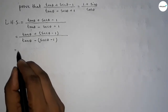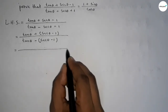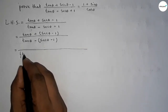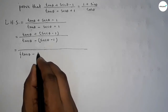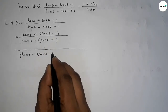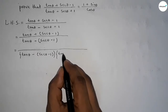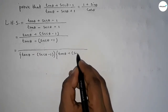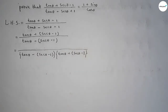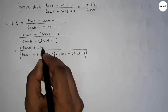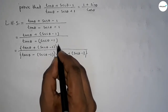Now we have to multiply up and down by the same thing. We multiply up and down by (tan θ + 6θ - 1). So multiplying up and down by (tan θ + 6θ - 1).